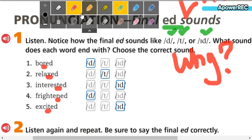So, what are you going to do now? You are going to practice the pronunciation. Bored. Relaxed. Interested. Frightened. Excited.